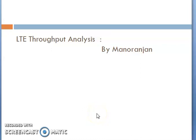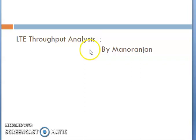Hello, good morning all, hope all are doing well. Today we are going to cover one of the major KPIs in LTE — that is throughput, both downlink and uplink. Throughput is directly proportional to your customer experience: if the customer is getting good throughput, the experience is good; if not, the experience is bad. So we can optimize accordingly to improve customer experience and improve the throughputs.